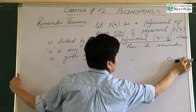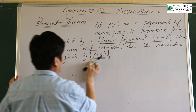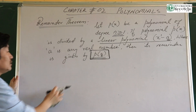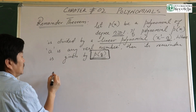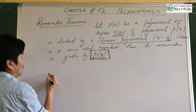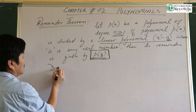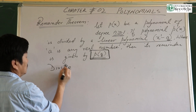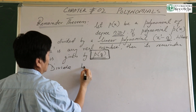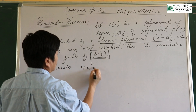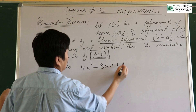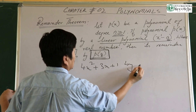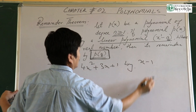Let's take an example. Divide 4x squared plus 3x plus 1 by x minus 1. We can use long division for this.